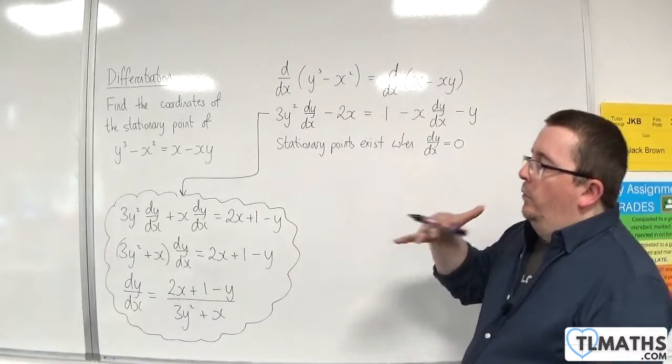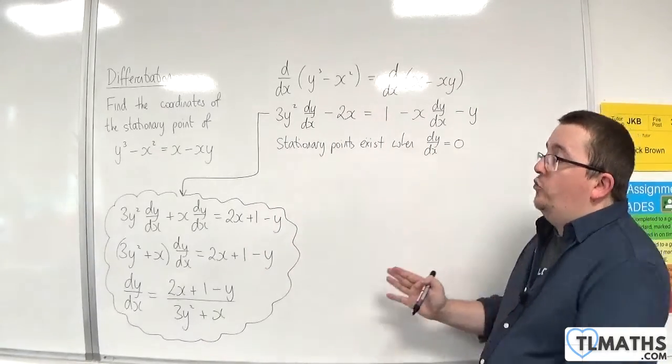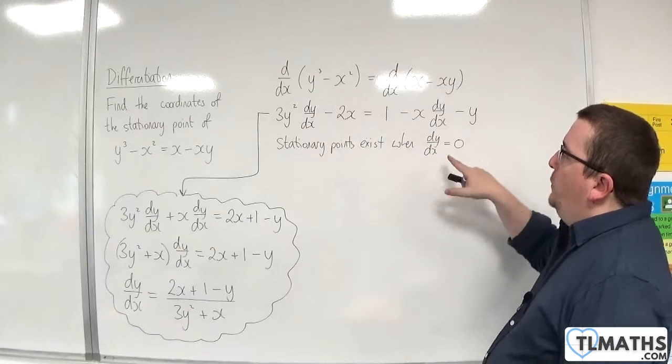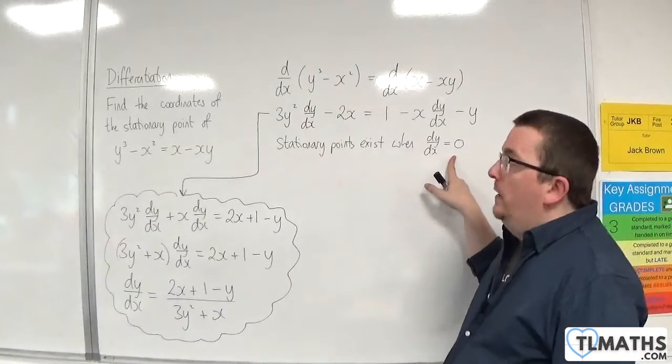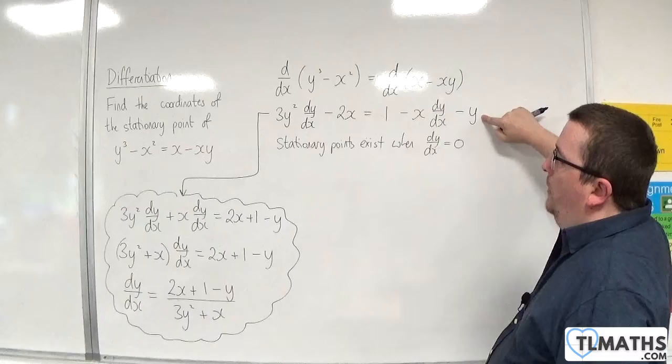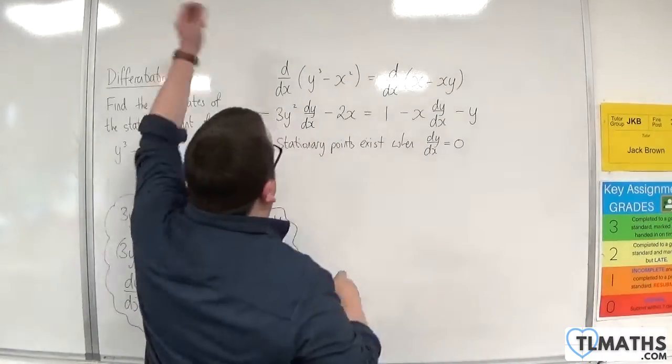However, although it's perfectly fine doing that, it is quicker when you're just trying to find stationary points to say, well, if I want dy/dx to be 0, then I can put dy/dx to be 0 now. So at this stage, I could make the terms dy/dx 0.